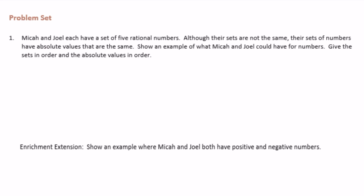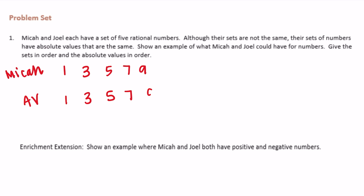So let's do Micah first. Let's say Micah might have 1, 3, 5, 7, and 9. The absolute values of those would be 1, 3, 5, 7, and 9.